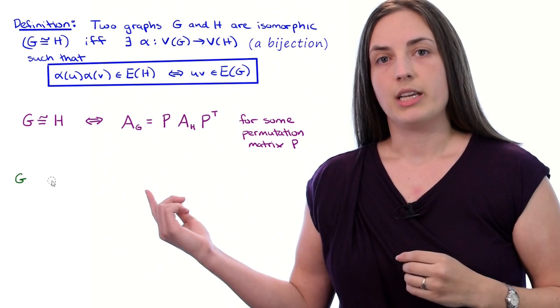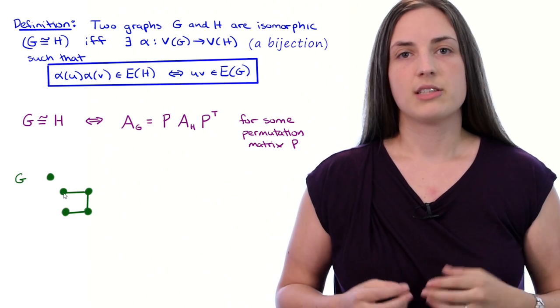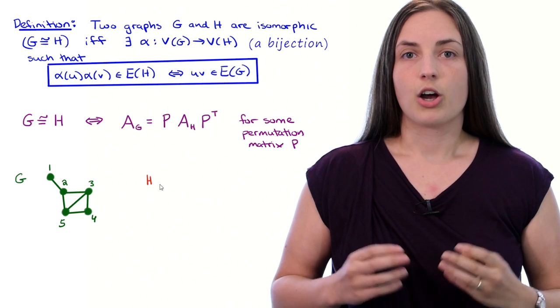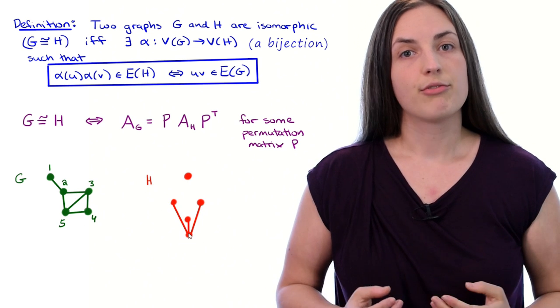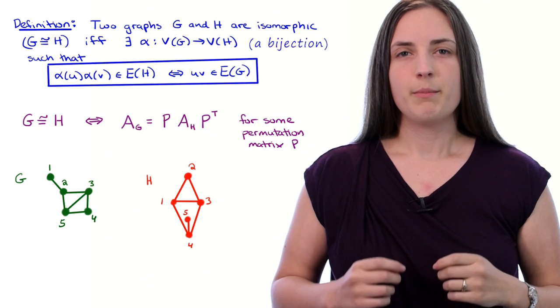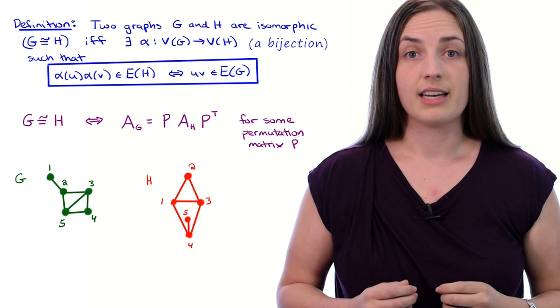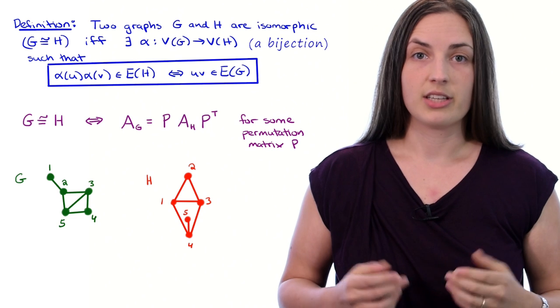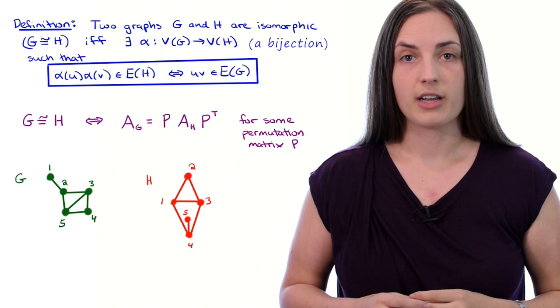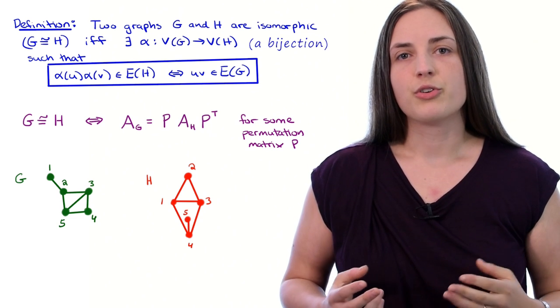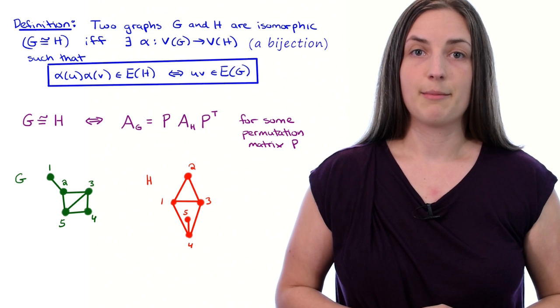We're going to take a look at how this works using an example. Our graph g will be a green graph on these five vertices, and I'll just label them. Our graph h is going to be a red graph also on five vertices. Because I chose such a small example, it should already be pretty clear that these two graphs are essentially the same, in other words, isomorphic. But it will be useful to work through all of the steps in this example anyways.